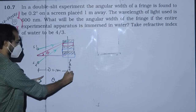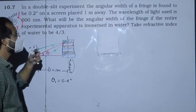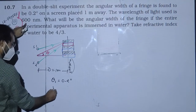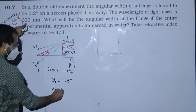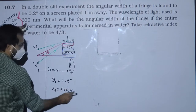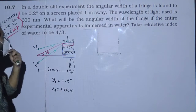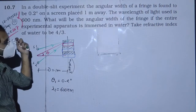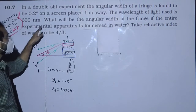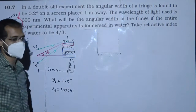The wavelength of the light is 600 nanometers. The question asks: what will be the angular width of the fringe if the entire experimental apparatus is immersed into water?